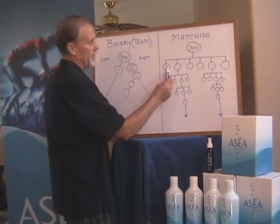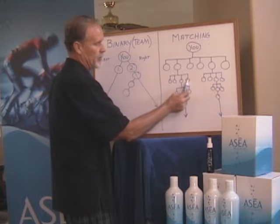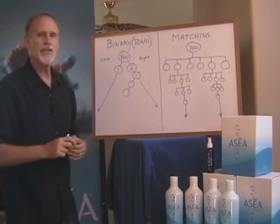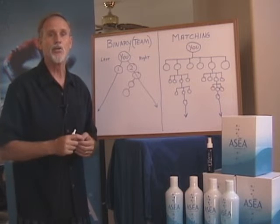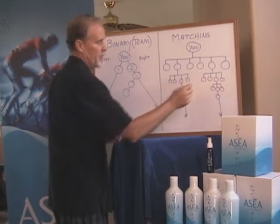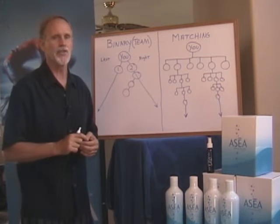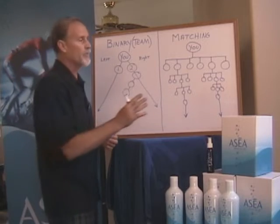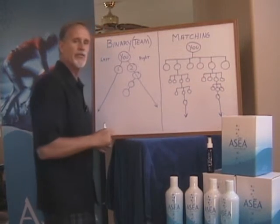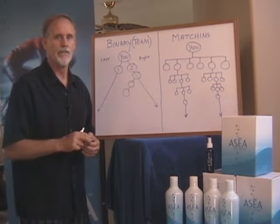Everybody that they sponsor will go on their level one, which is your level two. So your sponsorship tree is similar to what we call a uni-level format. Everybody you sponsor, everybody they sponsor, and everybody they sponsor — and you have the ability in the ASEA compensation plan to get paid or match every one of these people's checks down through seven generations. We'll talk about that on another video.